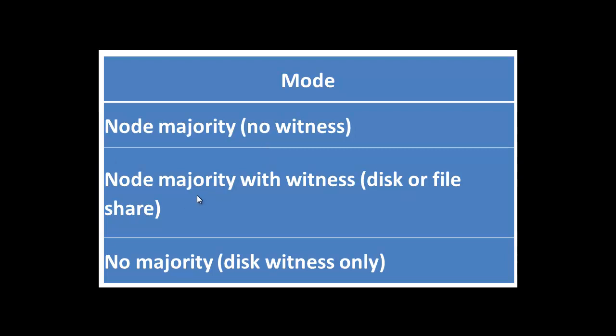The second mode is node majority with witness — disk or file share. In this mode, nodes have votes, but in addition to that, a quorum witness also has a vote. The cluster quorum is the majority of voting nodes in the active cluster membership plus a witness vote. A quorum witness can be a designated disk witness or a designated file share witness.